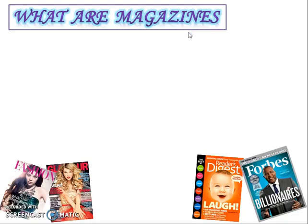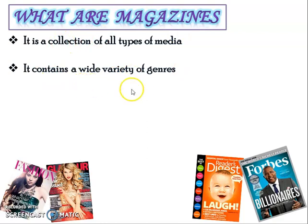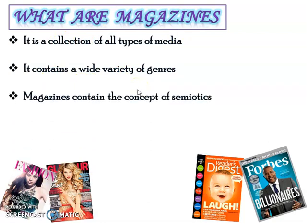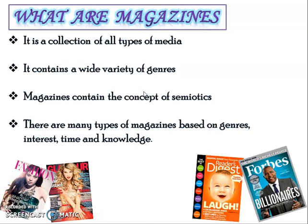So basically, let us first see what magazines are. A magazine is a collection of all types of media and contains a wide variety of genres. Magazines contain the concept of semiotics. There are many types of magazines based on genres, interest, time, and knowledge, and many of us are already aware of them.